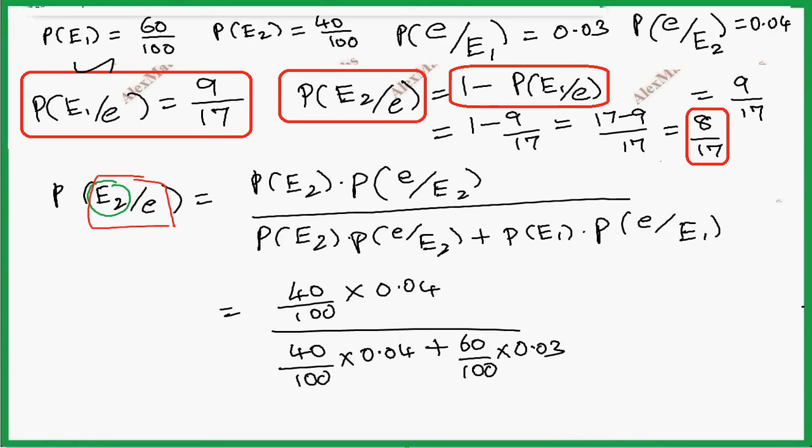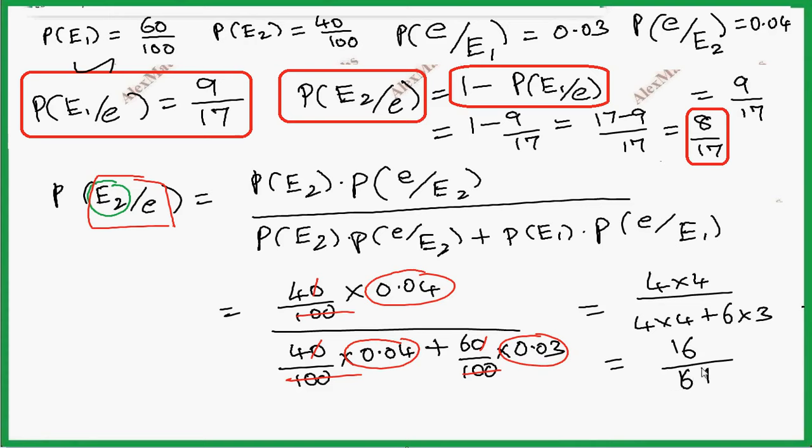The calculation: 100 is going to be cut, decimals move. This is 4 times 4, so 16, divided by 4 times 4 plus 6 times 3. It is 16 by 16 plus 18, so 16 by 34. Canceled by 2: 8 by 17.